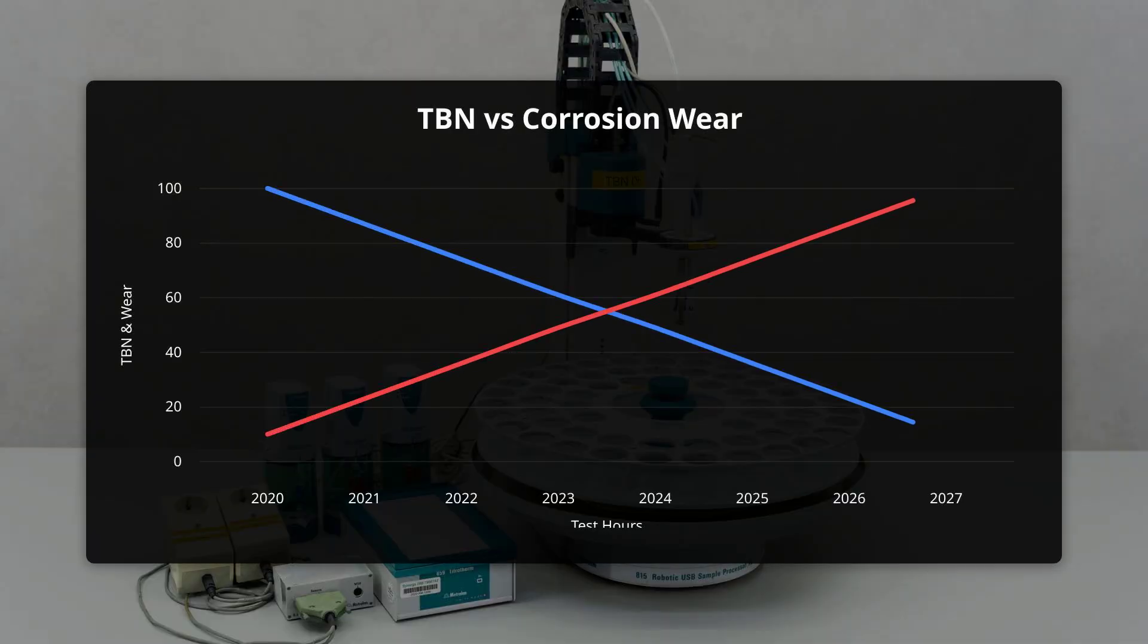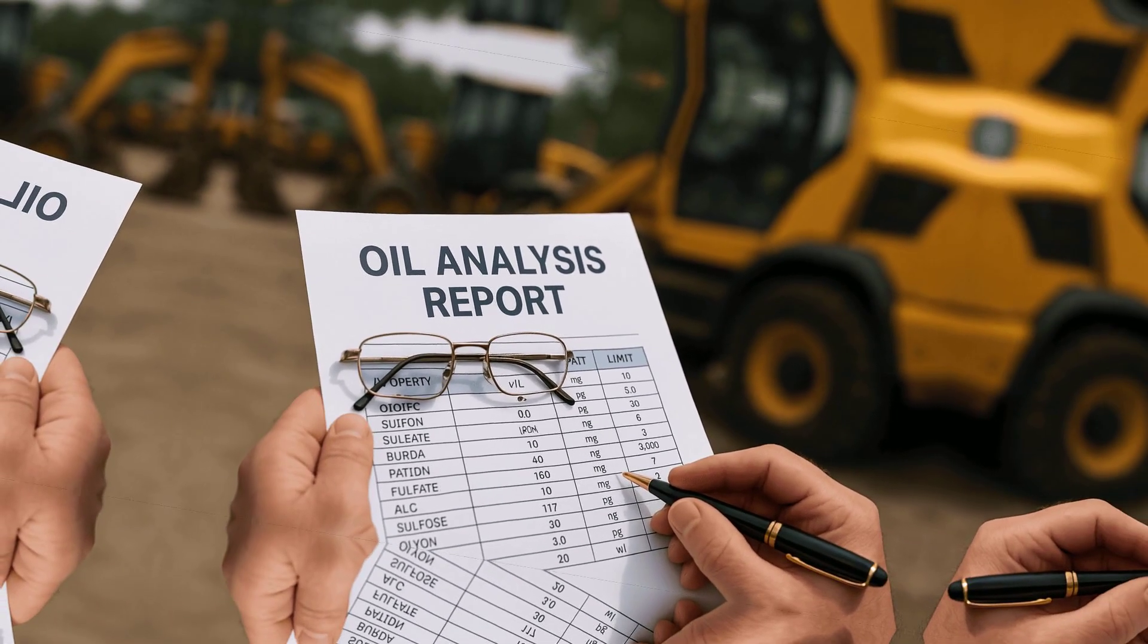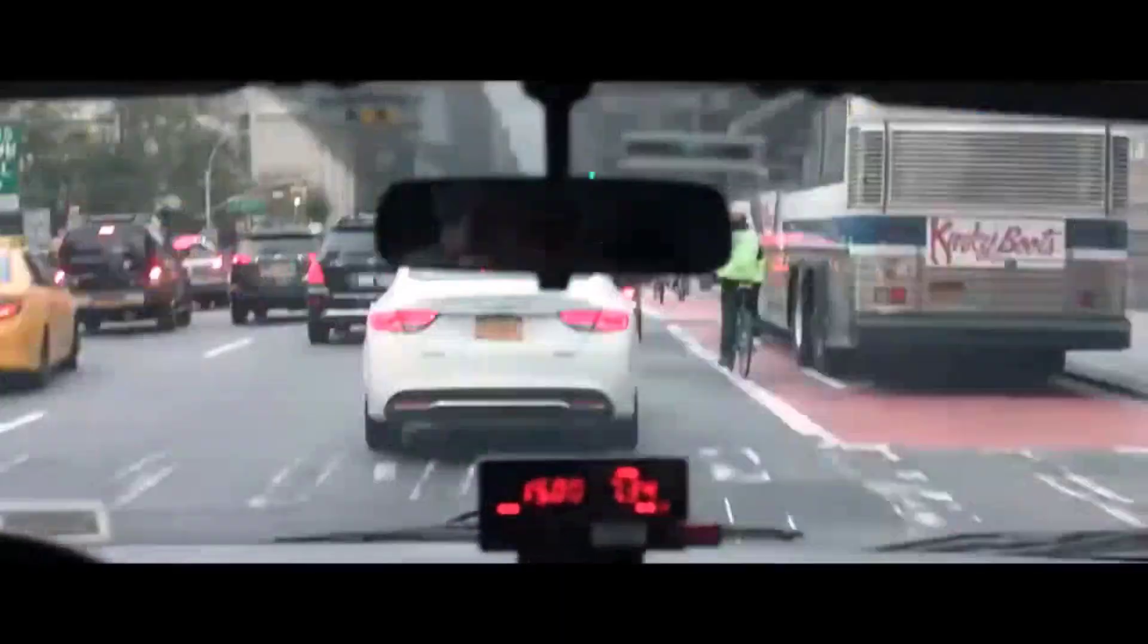Used oil analyses back this up, showing consistently low levels of lead and copper even after long intervals, and a stable total base number that signals healthy acid neutralizing reserves.